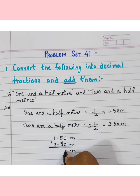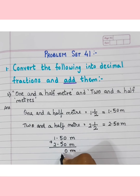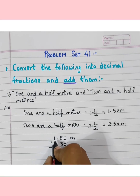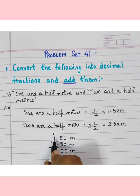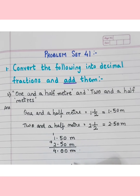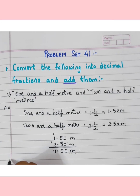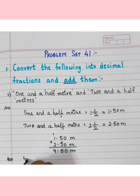0 plus 0 is 0. 5 plus 5 is 10, write 0 down here and carry 1. Write the decimal point. 1 plus 2 is 3, plus 1 is 4. So our final answer is 4.0 meters.